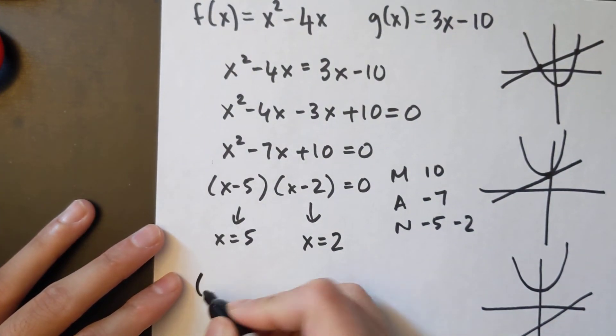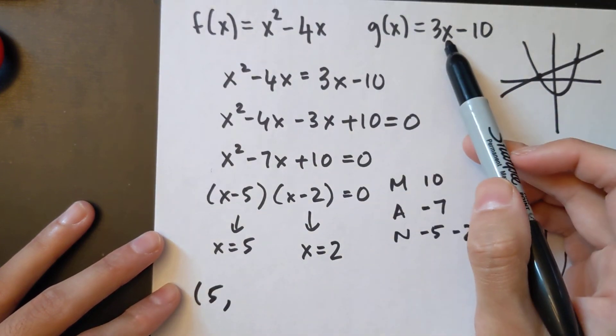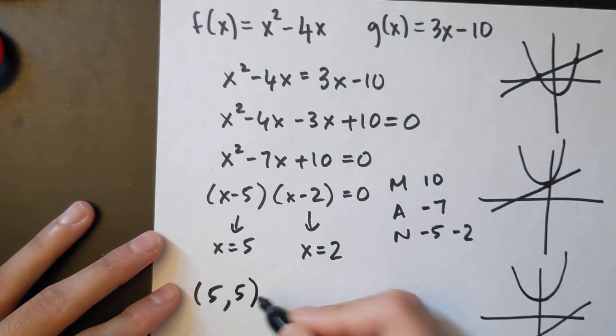So I'll write these as points. 5, if I sub in 5 into this equation that's 15 minus 10, I get a y value of 5 as well.